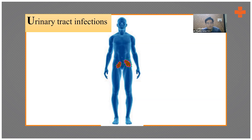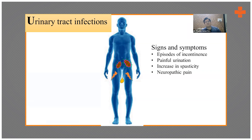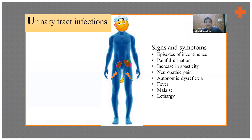Signs and symptoms of UTI include episodes of incontinence, painful urination, and on examination, increased spasticity — one of the causes of increased spasticity may be a UTI. It may also be associated with neuropathic pain, and it can precipitate autonomic dysreflexia. Obviously, as an infection, it can also cause fever, malaise, and lethargy.